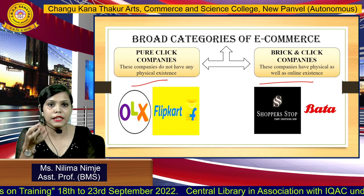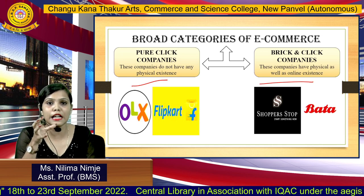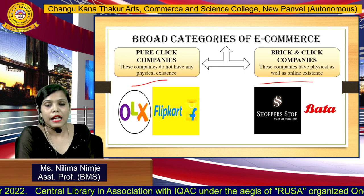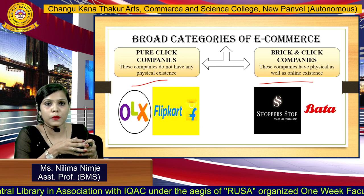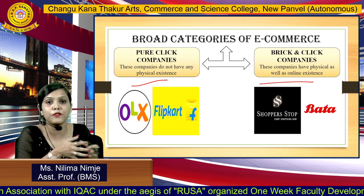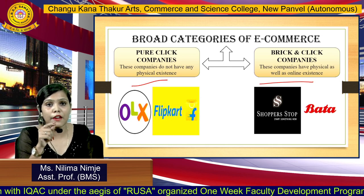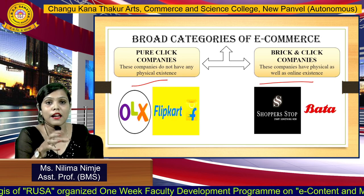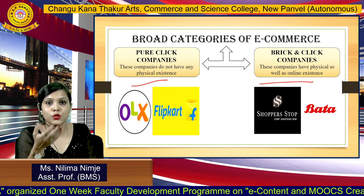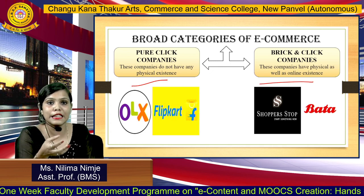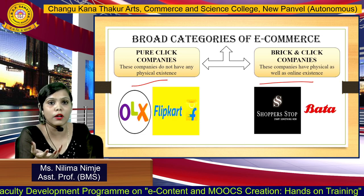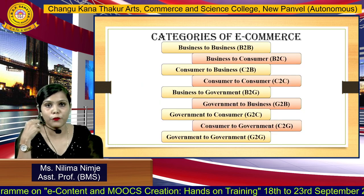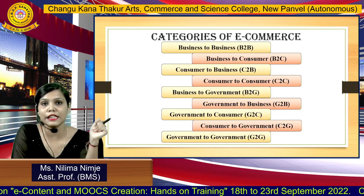The next category is brick and click companies. These companies have both physical and online existence — they have a physical store and are also available on an online website. Their customers have more ways to make a purchase. For example, customers of Shopper's Stop and Bata can either shop online or go to an offline store to make a purchase.